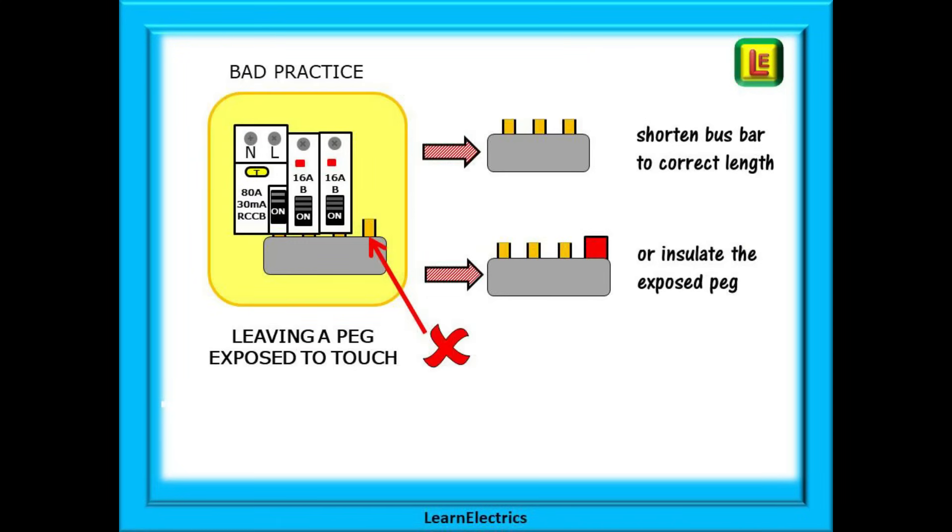One bad practice to avoid is when a 4-peg bus bar is used but only 2 MCBs are installed. There is a spare peg and we must at all costs avoid leaving this peg uncovered and exposed to touch. There are several solutions. Either shorten the bus bar to just 3 pegs if it is unlikely that the number of circuits will ever be extended, or insulate the exposed peg to remove the danger of accidental contact, or you could install a third MCB and leave this unconnected. At least it will cover the exposed peg.